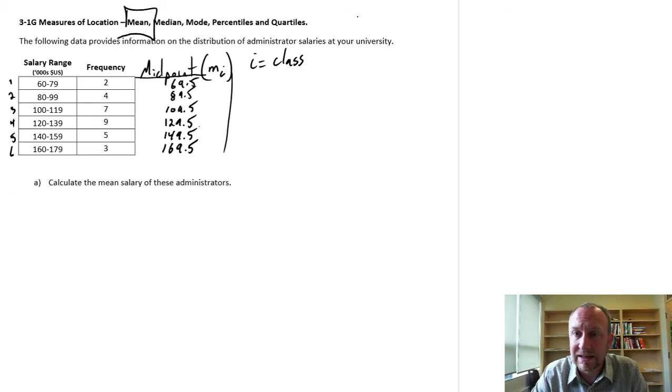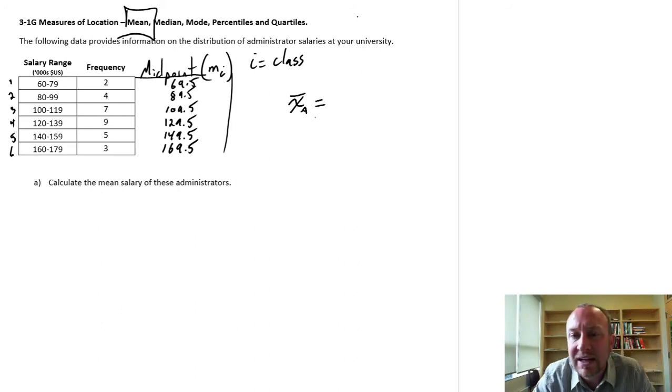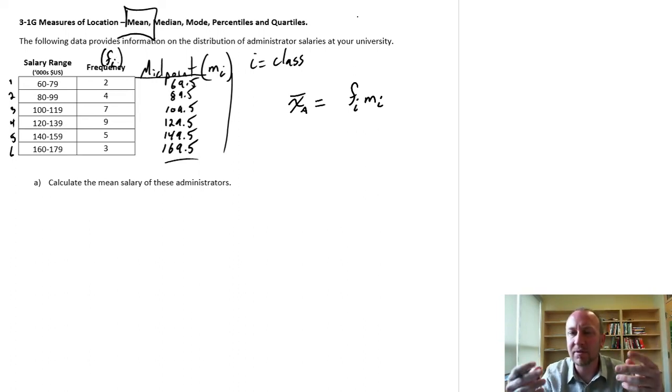Now how do we go about getting our mean from this? So our sample mean—I'm going to put a little 'a' here because really this is an approximate value. It's calculated in a similar way to a weighted mean or weighted average. We're going to use as our values of interest these midpoints. So I'll use the notation MI. We're going to weight those by the frequency. So this will be the frequency FI. So that's the number of times an observation exists within that class.